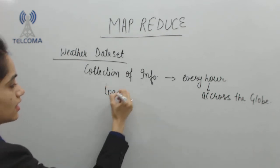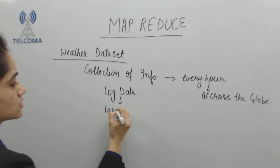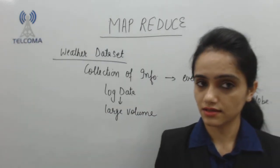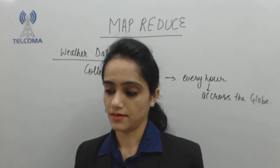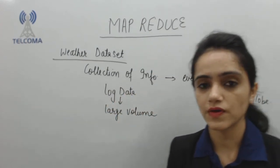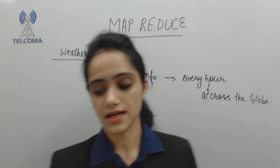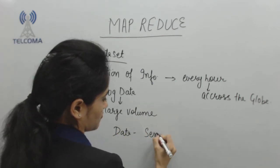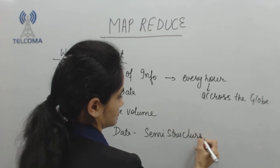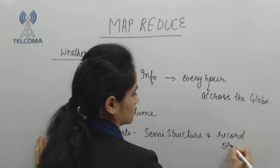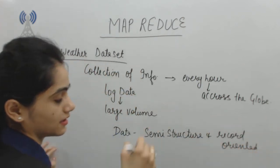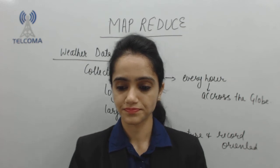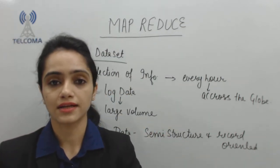We have taken only one example — the weather dataset — which stores a large amount of data. For analyzing this data we require MapReduce, because we want to process all this data, which is semi-structured and record-oriented. It forms big data, and for processing it we require MapReduce.